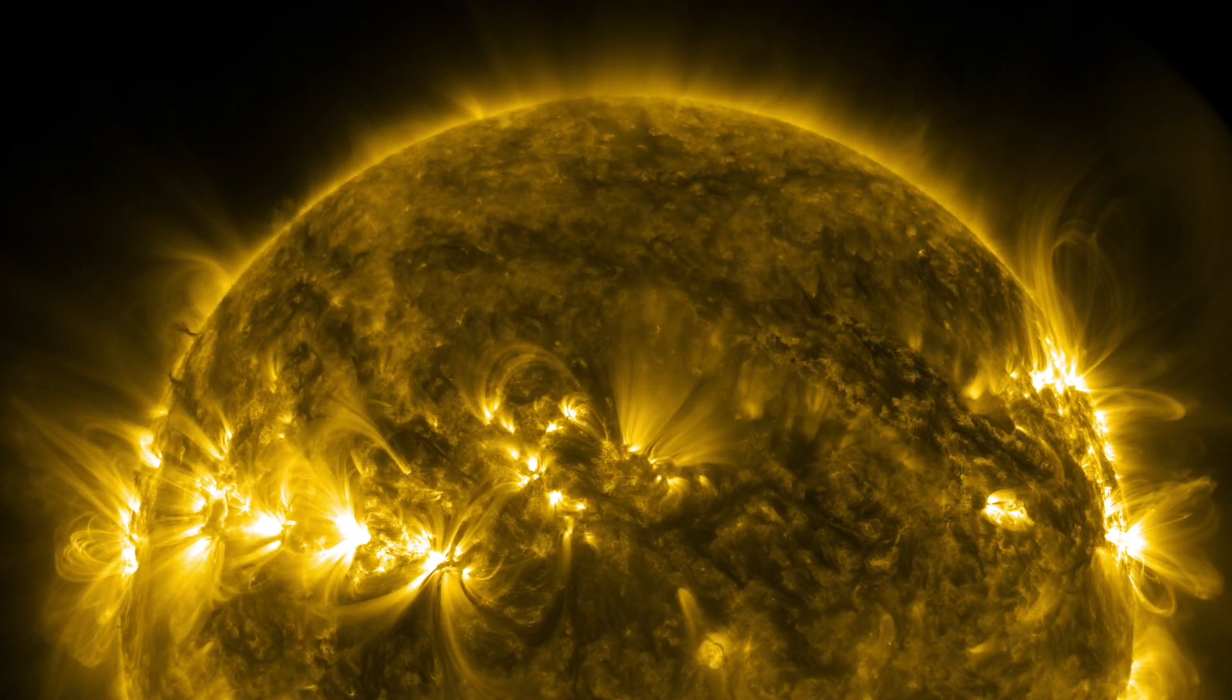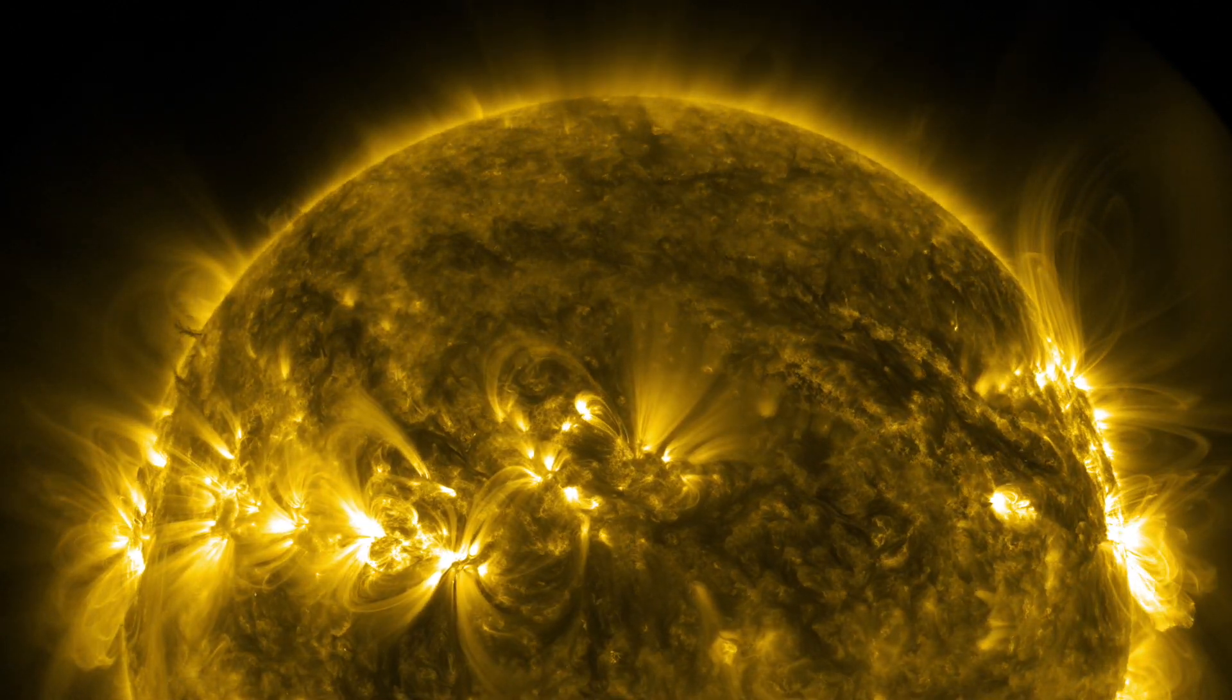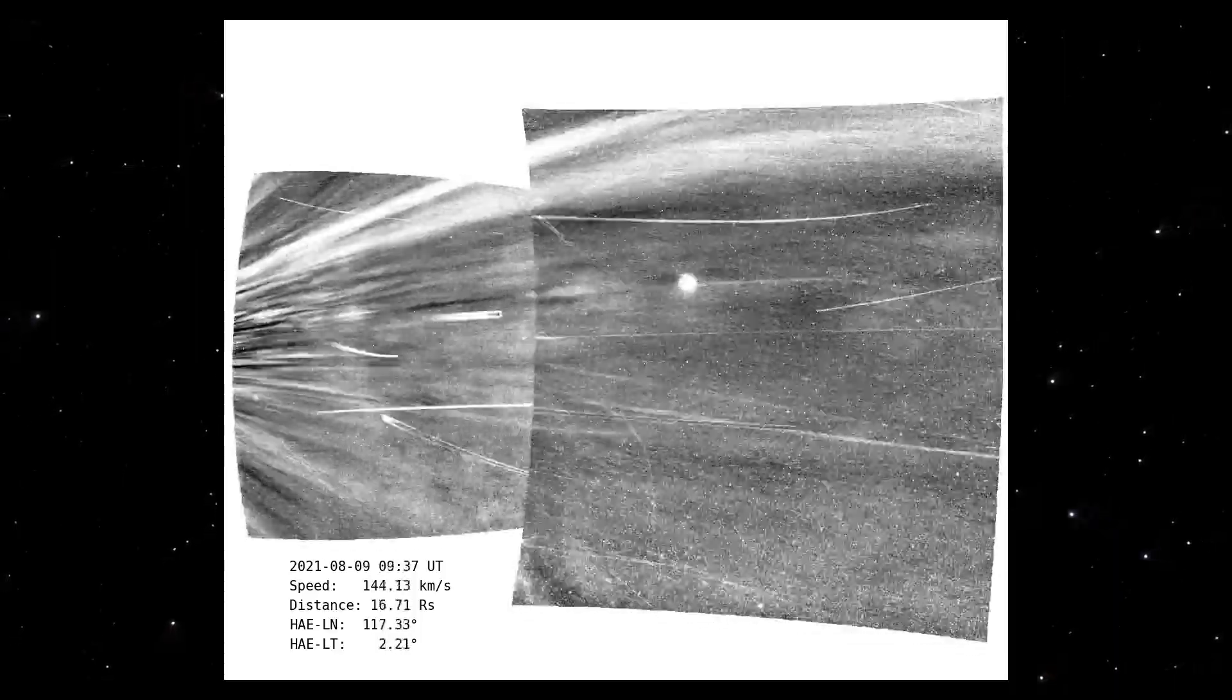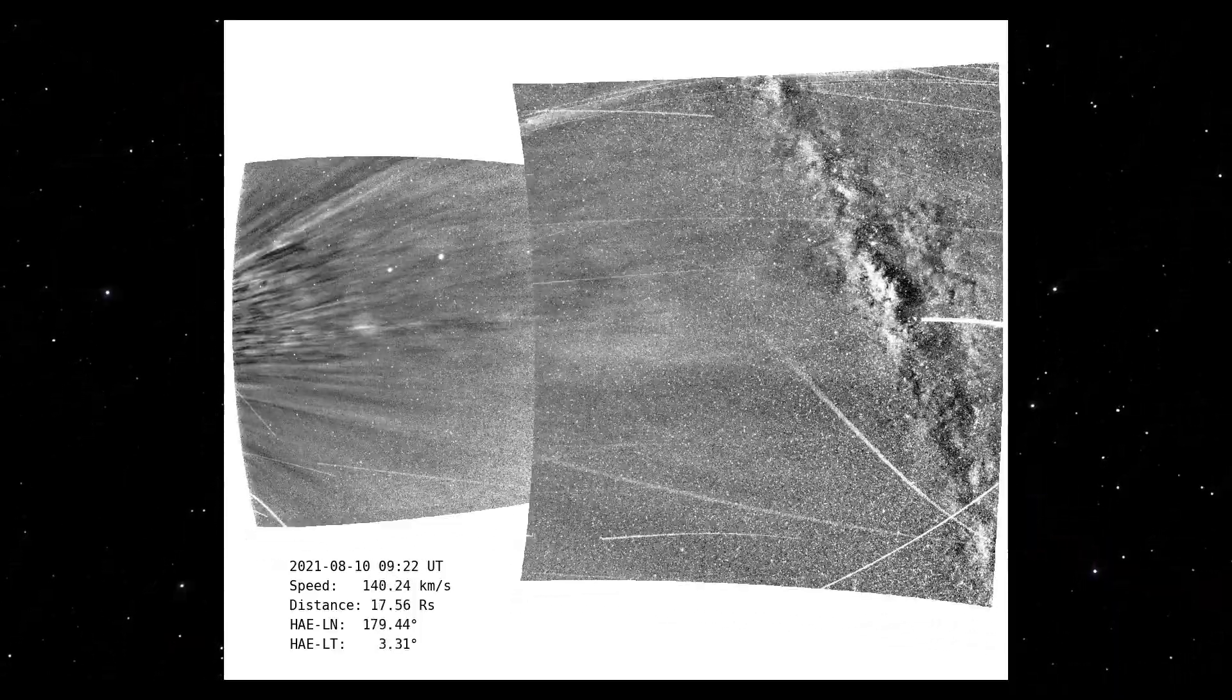Again, this is what we see around the sun during an eclipse. You can see streamers here as the probe flies above and below them inside the corona.